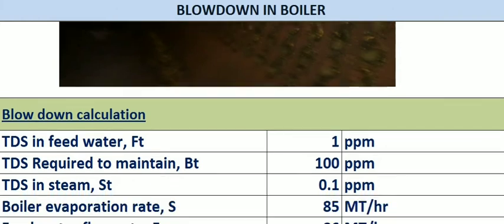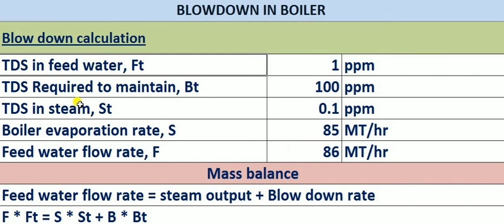Now, how to calculate the blowdown? The parameters required are: TDS measured in the feed water analysis — in our field it is 1 ppm, which is good quality water. We consider a 50 kg/cm² steam drum operating pressure. As per the vendor recommendation we maintain 100 ppm TDS in the boiler water; as per the standard we can maintain up to 150, 200, or 250 ppm, but for better efficient operation we consider 100 ppm.